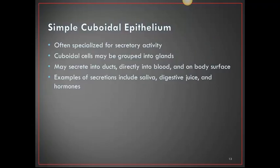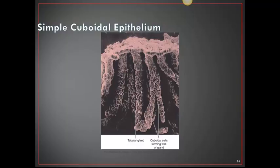Simple cuboidal epithelium often specializes in secretion activity. Cuboidal cells may be grouped into glands and may have secretion ducts leading directly into blood or the body surface. Examples of secretions include saliva, digestive juices, and hormones. The secretion cells arrange themselves in single-like branches or tubules that open to the surface, allowing secretion of mucus, sweat, hormones, or other substances. A picture of the stomach lining is shown here, where it is secreting digestive juices.